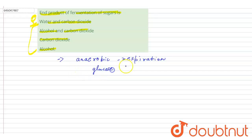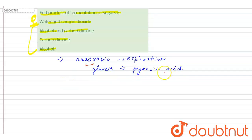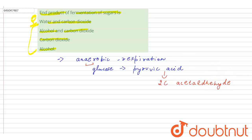The glucose is broken down into pyruvic acid, and this takes place in the absence of oxygen, as it is anaerobic in nature. During the fermentation of sugars, this pyruvic acid converts into a two-carbon compound — acetaldehyde.